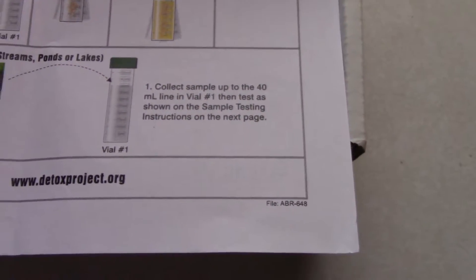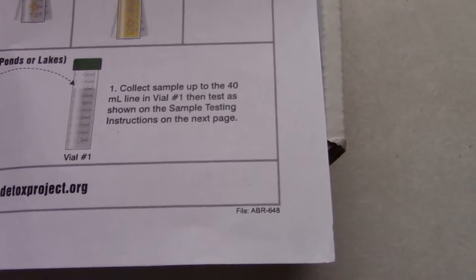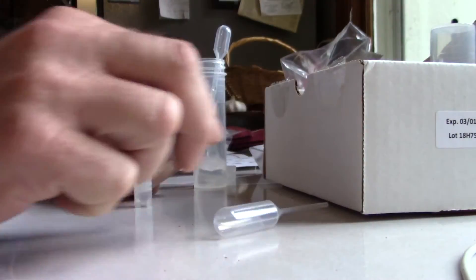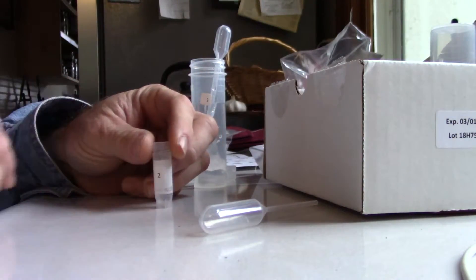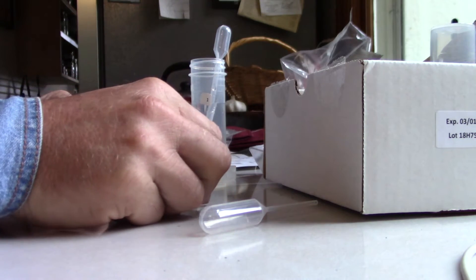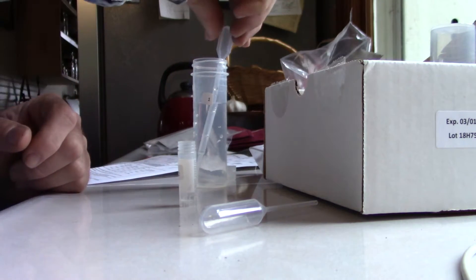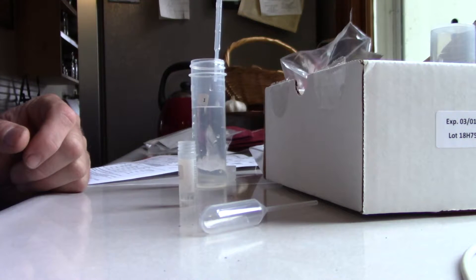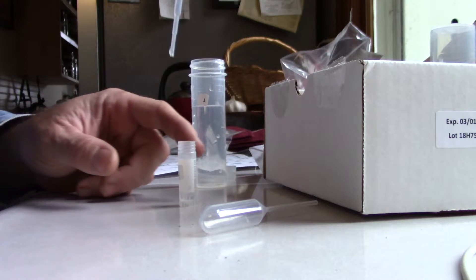So I'm almost nervous about doing this. Here we go. Tap water. Vial number two has the liquid already in it. Let's get down and turn that upside down. All right, that's close enough.